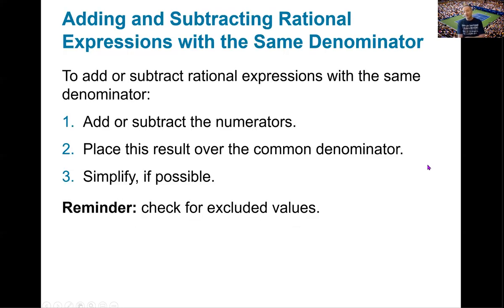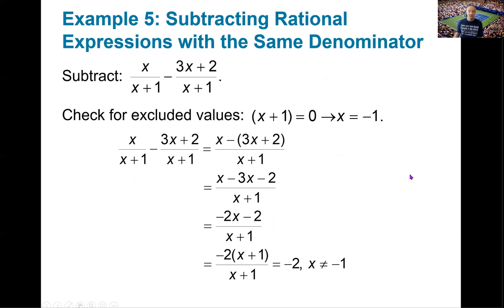Now adding and subtracting rational expressions with the same denominator. Students often struggle more here because we have to force a common denominator. Whenever we add or subtract numerators, we can only do that once we have the common denominator. For example: x over x plus 1 minus 3x plus 2 over x plus 1 — this is easy because you already have a common denominator. So we subtract numerators and keep the common denominator, giving x minus the entire numerator of 3x plus 2, all over x plus 1.